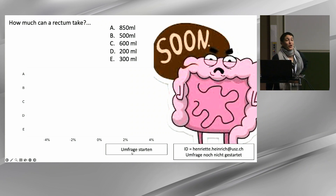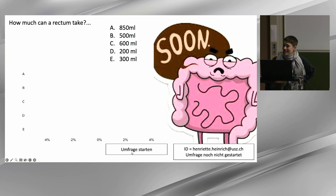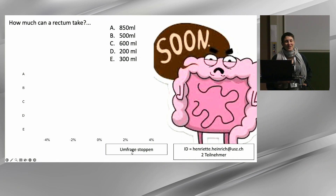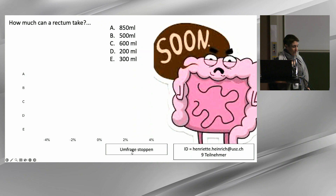What is Stocky? Stocky is potato porridge. You're never going to forget the results that way. Please vote — A, 850, almost a liter; B, 500; C, 600; D, 200; E, 300.